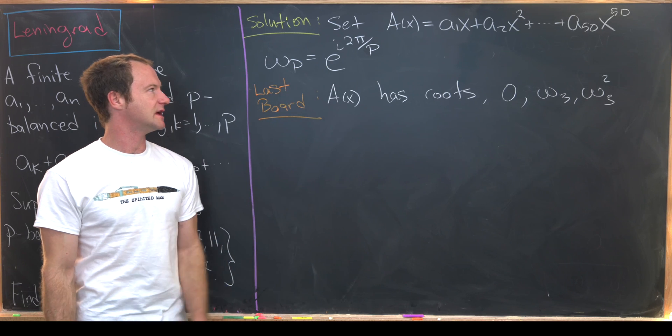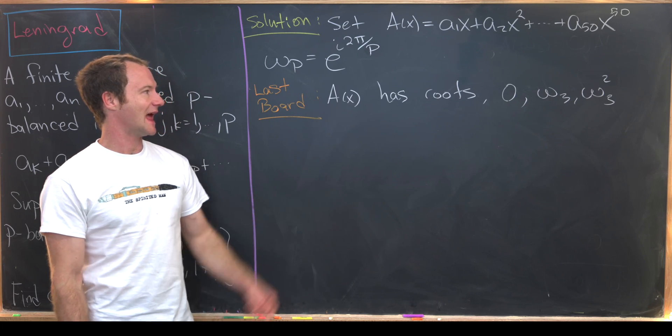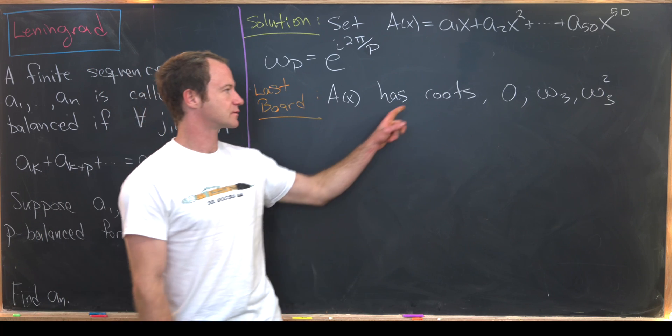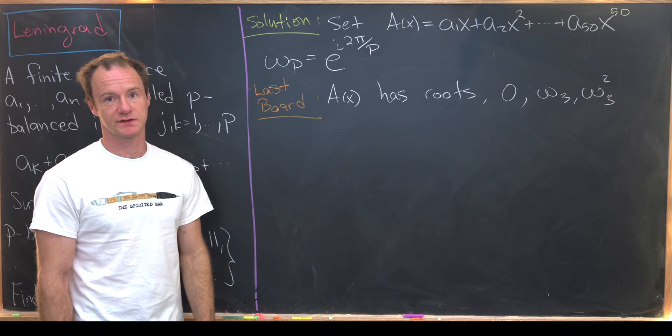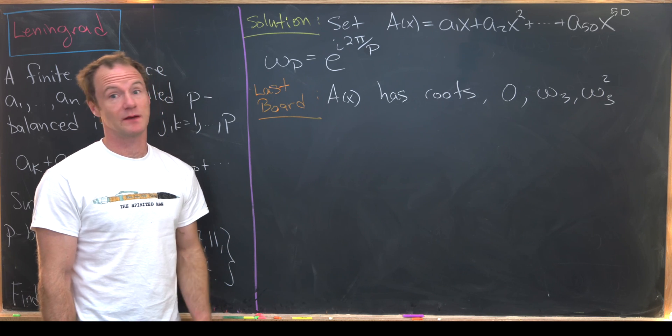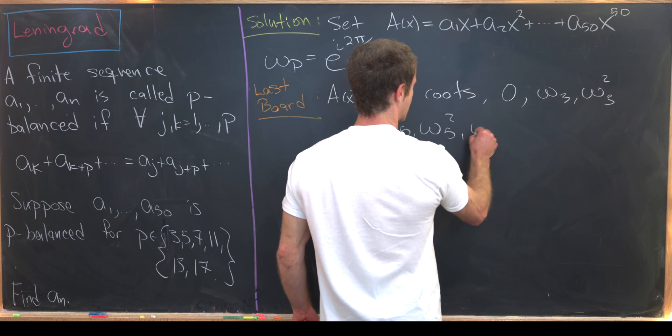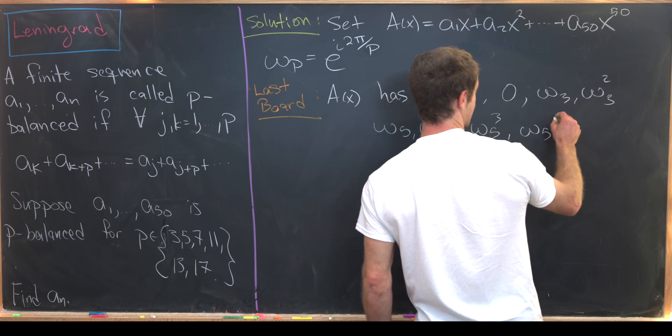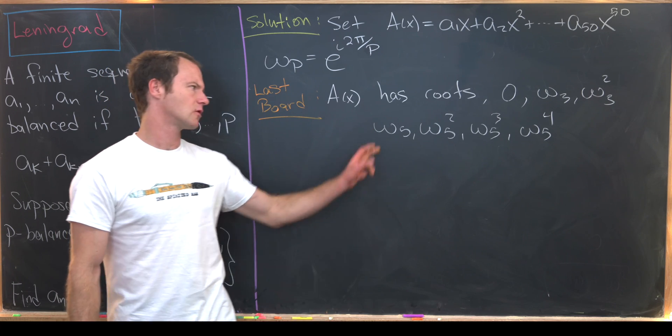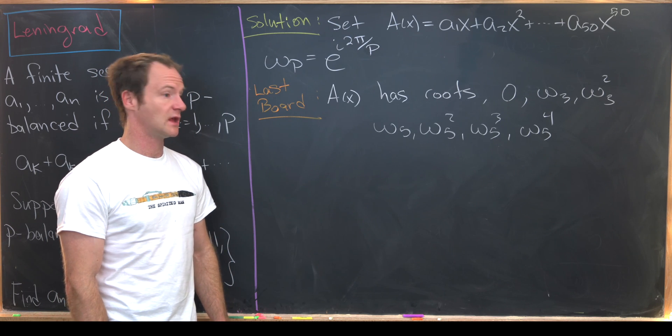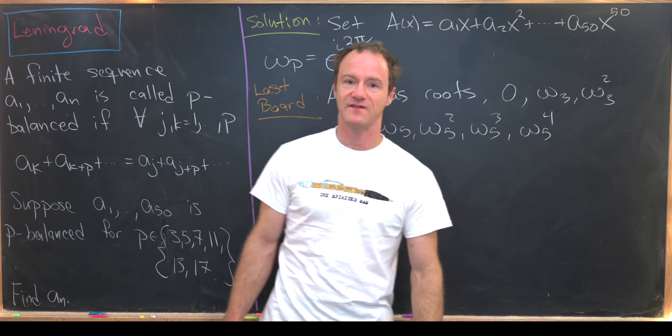On the last board we set omega_p equal to this pth root of unity, e to the i 2 pi over p. We also saw that A(x), our polynomial built from our sequence, has roots of 0, omega_3, and omega_3 squared. So it has at least three roots. But via a parallel observation to what we did on the last board, it will also have roots omega_5, omega_5 squared, omega_5 cubed, omega_5 to the fourth. That's just by plugging in omega_5 or omega_5 squared, so on and so forth, and seeing that we get the polynomial equal to 0 using this fact that it is 5-balanced.